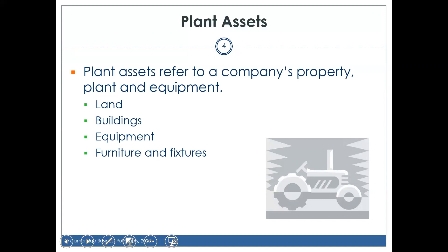Plant assets are the things you normally think of when you think of long-term assets: land, buildings, equipment, furniture, and fixtures — PP&E, property, plant, and equipment. On companies' balance sheets, that category is often used to summarize all of them, but not always. Sometimes they're broken down by individual long-term asset.